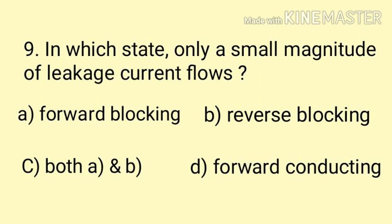But in reverse blocking state, junction J1 and junction J3 are reverse biased whereas junction J2 is forward biased, so there is no conduction between junction J1 and junction J3, and a very small amount of leakage current flows through the middle junction. Here the correct answer is option C, both A and B.